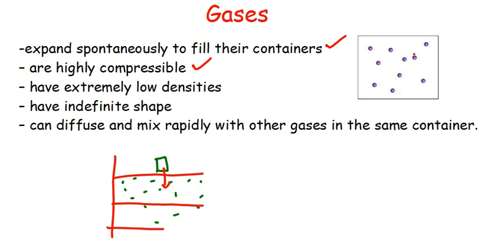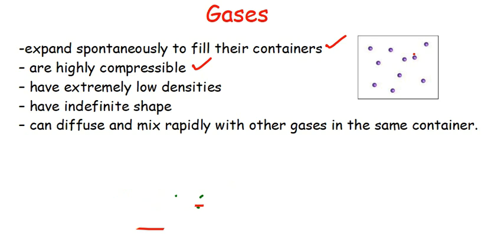That's why in hydraulics, liquids are used — because they are not compressible, but gases are. Gases also have extremely low densities. That's why gases exist in the atmosphere while liquids settle on the ground. Gases also have indefinite shape — there is no specific shape of a gas; it follows the shape of its container.